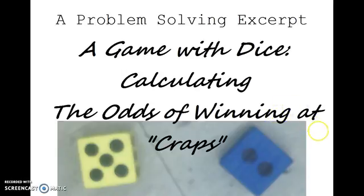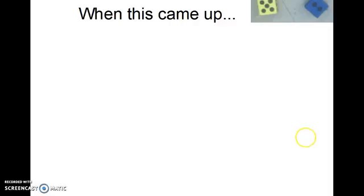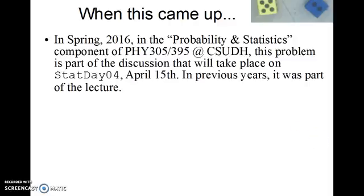I'll review the rules as we go on, and we'll go through in great detail talking about not only the numbers for the calculation but some notes about why I think this is a good calculation. This came up specifically in spring 2016 in the probability and statistics component of our course. It's part of the discussion that we'll have on April 15th. In previous years it's been within the lecture, but I thought it needed a little more fleshing out, so I wanted to make it its own file.